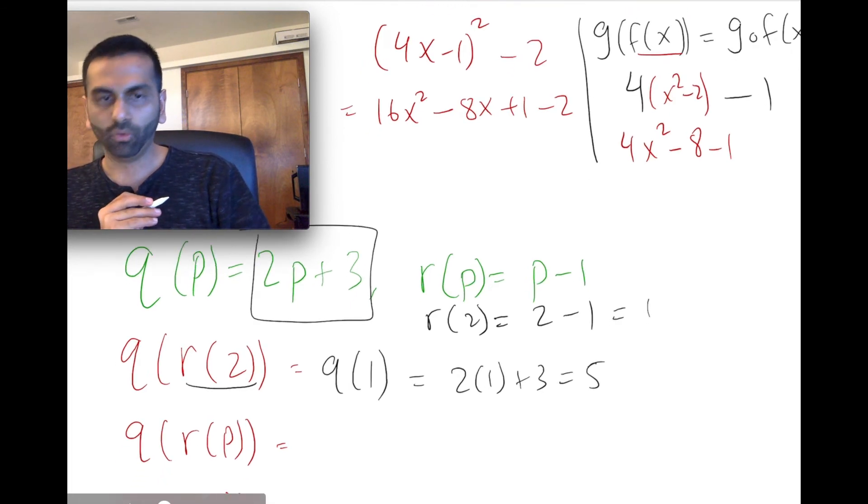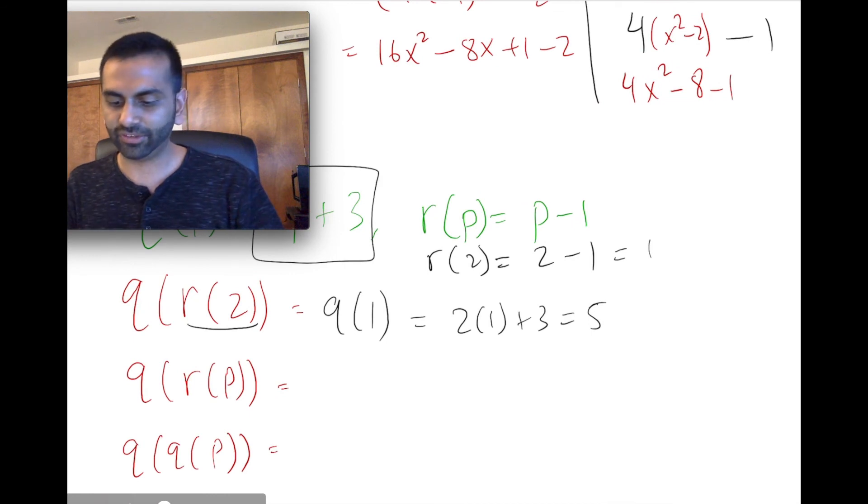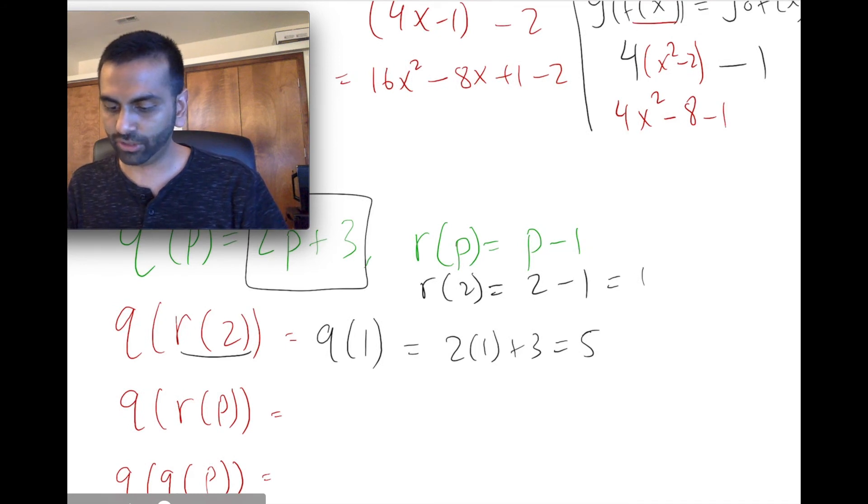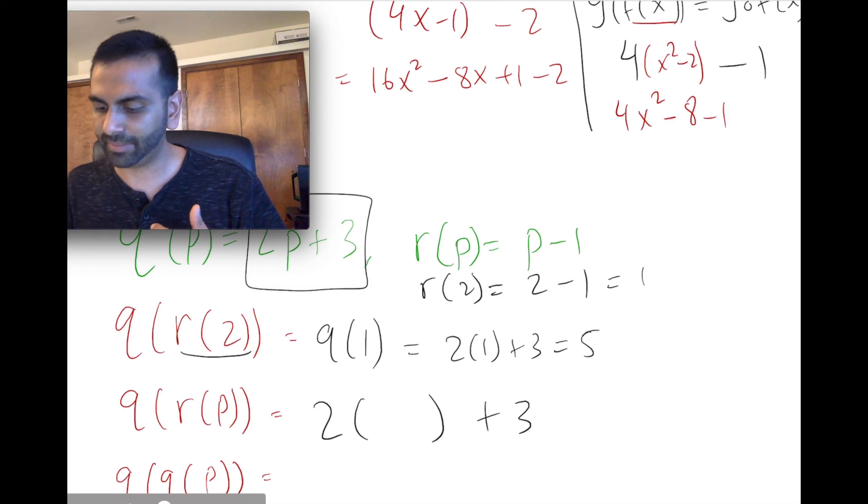What if the question asks, what's q of r of p? Well, this is no different. This is basically saying into q, q is 2p plus 3, but instead of p, we're having r of p. So instead of p, we have what r of p is, which is p minus 1.